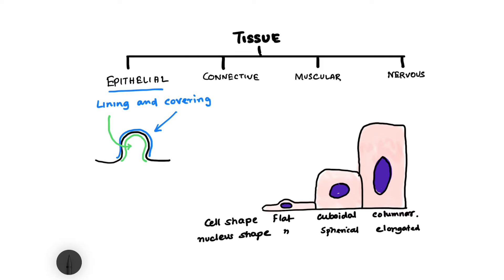In light microscopy it is difficult to visualize epithelial cells directly, but the nucleus is very darkly stained, so you can identify it. From the shape and number of nuclei you can determine the cell type — whether columnar, cuboidal, or flat — and also whether the epithelium is unilayered or multilayered. The nuclei serve as an important indicator.